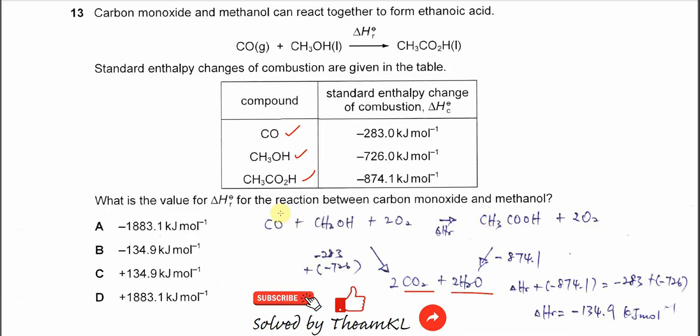So the carbon monoxide gets burned to form CO2. Methanol gets burned to form CO2 and H2O, and the ethanoic acid when it's burned also will form CO2 and H2O because it's an organic compound.